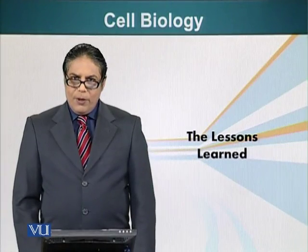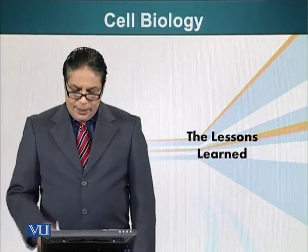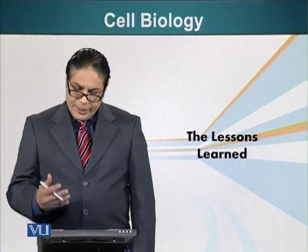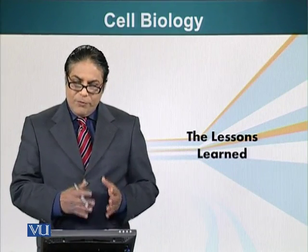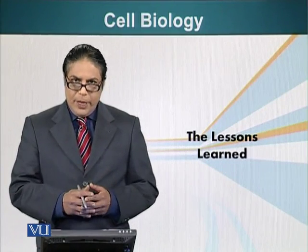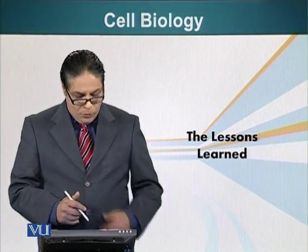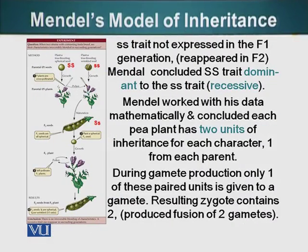In this module, we look at the lessons Mendel learned from his experiment, which we talked about in the previous module. Here is the cross again, shown on the full slide. He noticed that the wrinkled seed trait was not expressed in the F1 generation.